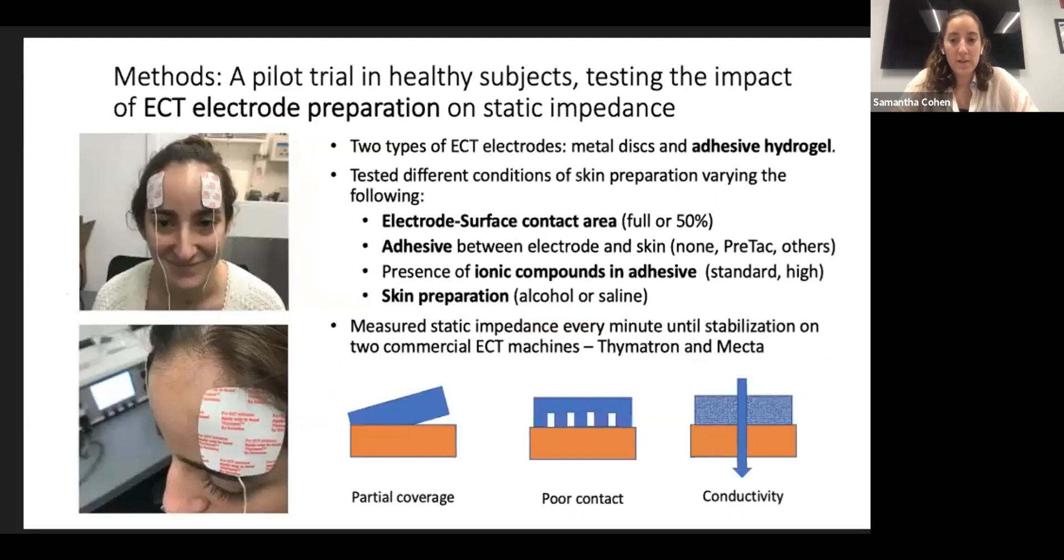In the present study, we vary the conditions under which adhesive hydrogel electrodes were prepared for ECT. During the administration of ECT, there are many different ways to prepare the skin for electroplation. Particular factors of importance include the contact area between the skin and the electrode, the adhesion between the skin and the electrode, and the cleaning solution for the skin. Preparations vary in conductive gels used and types of cleaning solutions. We were interested in how these conditions impact static impedance.